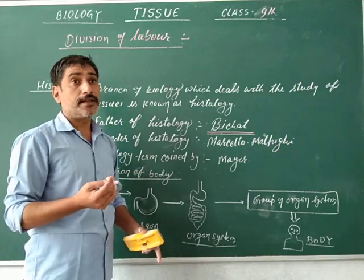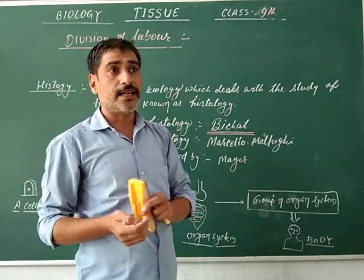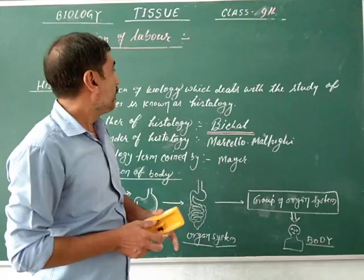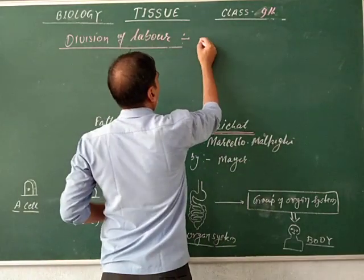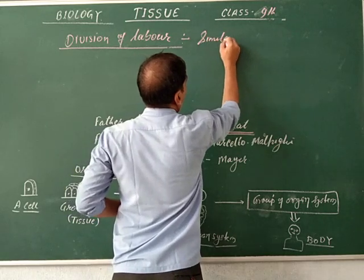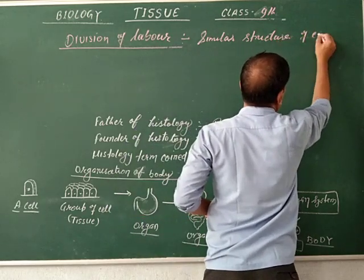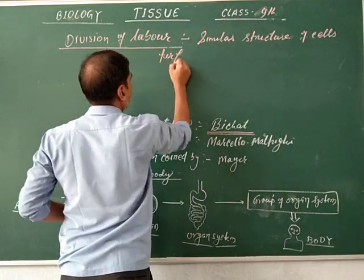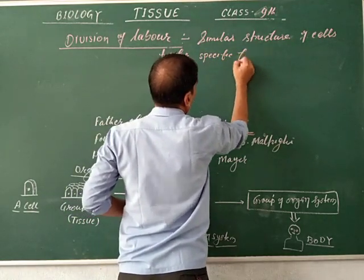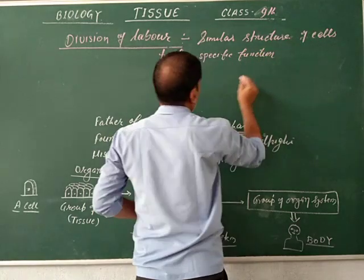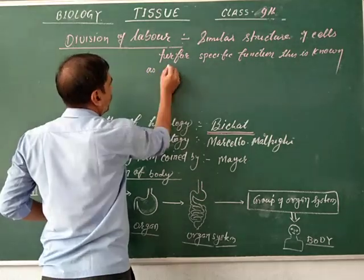This is known as division of labor. In multicellular organisms, different groups of cells perform different functions. Similar cells with a similar structure perform a specific function. This is known as division of labor.